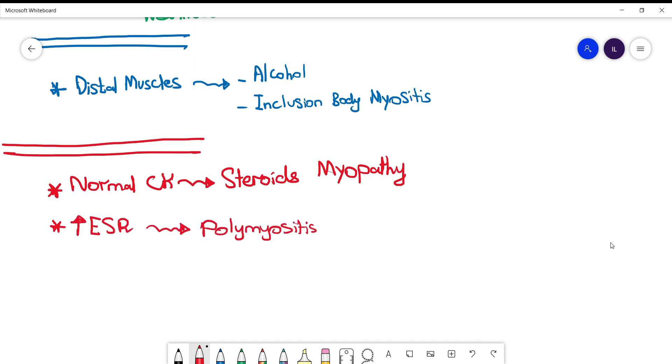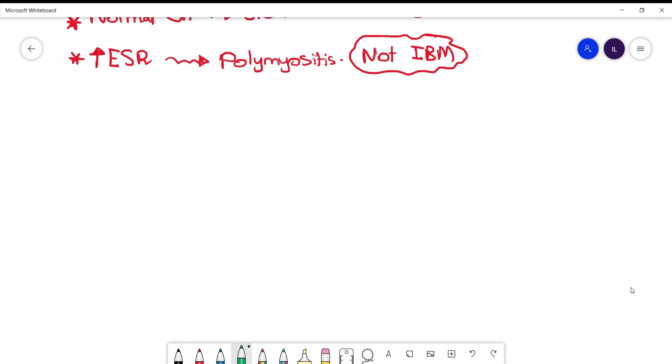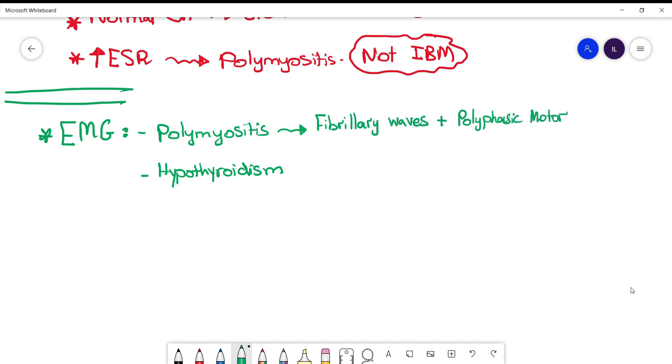If you want to do EMG, you need to know two diseases. In polymyositis you will have fibrillary waves and polyphasic motor unit potentials. In hypothyroidism it's more sleepy, no fibrillary waves, and the amplitude will be low.